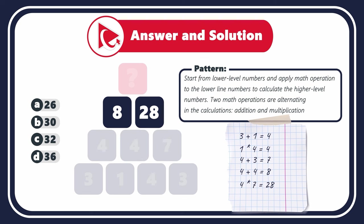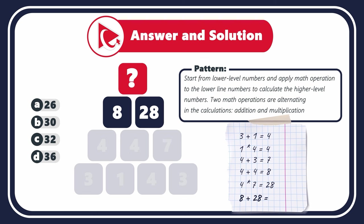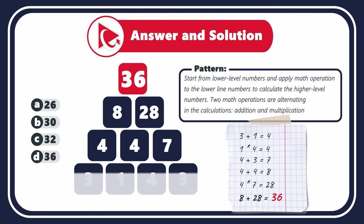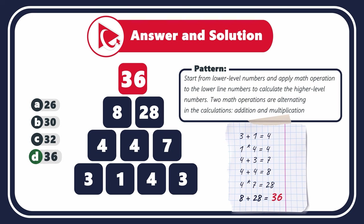4 multiplied by 7 equals 28. To calculate the top number, we add 8 and 28 to get 36. So the correct answer here is choice D, 36.